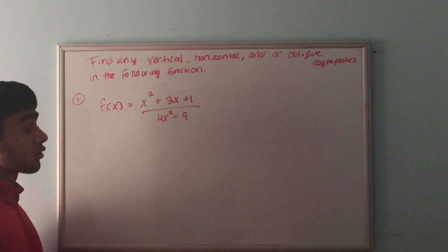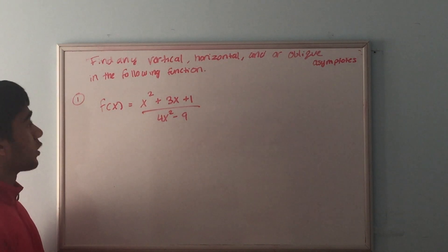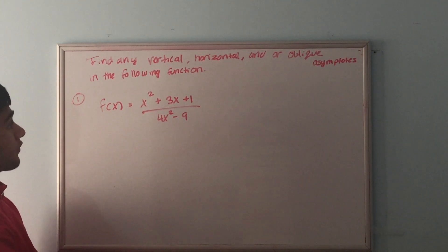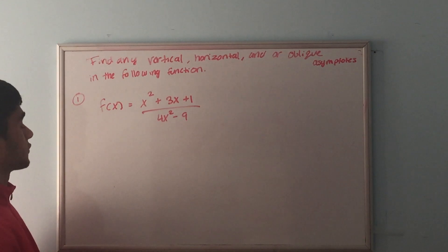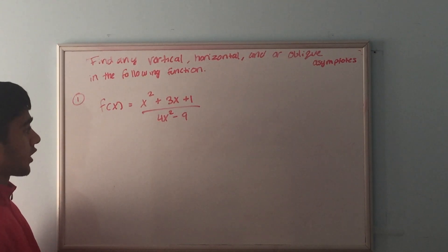In this video we are going to do some practice asymptote problems. The first question is: find any vertical, horizontal, and/or oblique asymptotes in the following function — f(x) equals x squared plus 3x plus 1 over 4x squared minus 9.